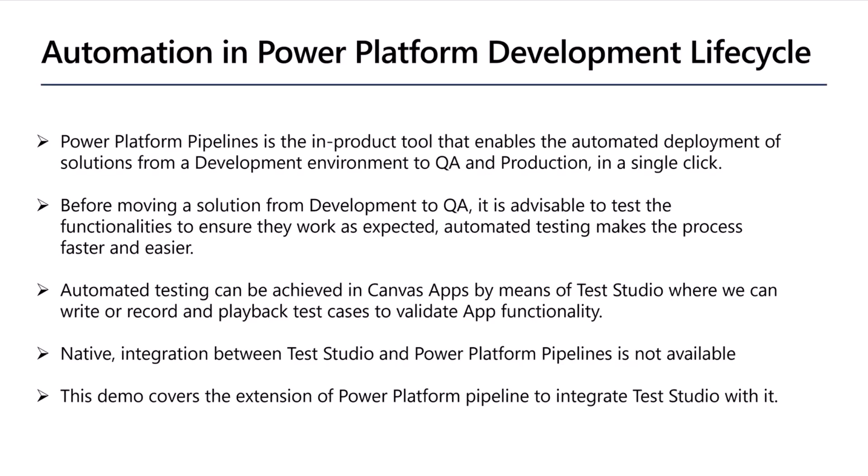For automated testing in Canvas App, we have the Canvas App Test Studio that allows you to record your test cases and play them back. If we want to combine these two automated tools together — Power Platform Pipeline and Test Studio — natively that option is not available. But I'm going to show you how you can integrate them together, so that during deployment from development to test environment, automated testing is pushed in between.